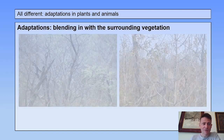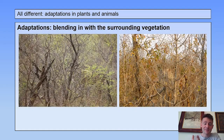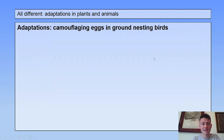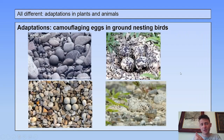As an introduction, there are all kinds of adaptations, like blending in with the surrounding vegetation. If you look carefully you see a deer — you see the eyes, the legs — and you see a giraffe and its head. There is also adaptation with camouflaging eggs in ground-nesting birds, so these eggs just blend in with the stones around them.